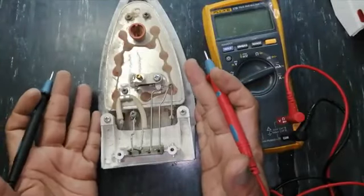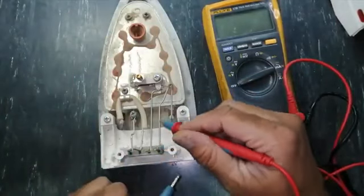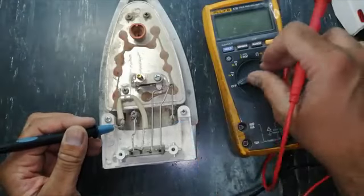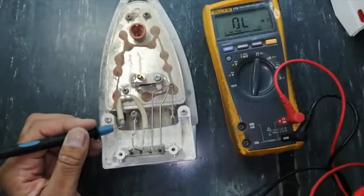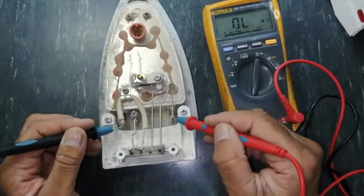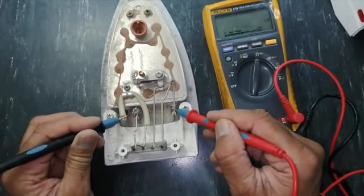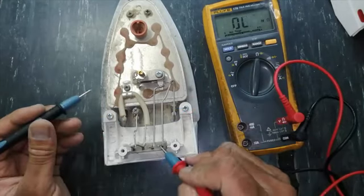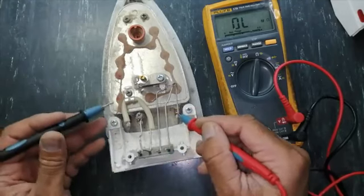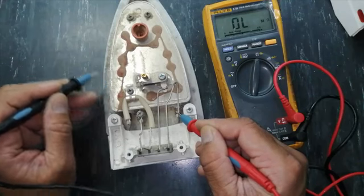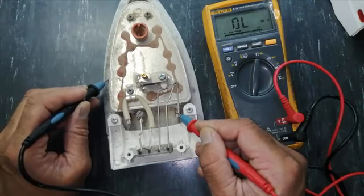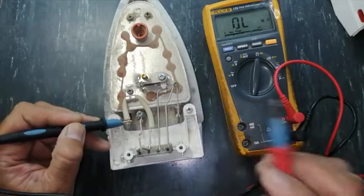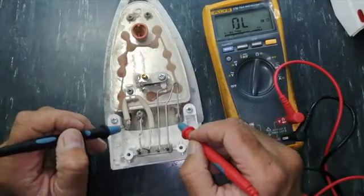Now we have this base. This line is going to element. And this is the second end of the element. Set multimeter to ohm. Check resistance. It is 39.7 ohm. So that means it is good. Now connect one line to this end. And check with the ground. Traces. No short circuit. Connect with this end. And check with ground. No short circuit. So element is safe. Element has resistance.